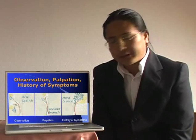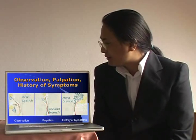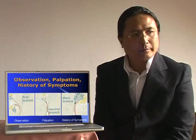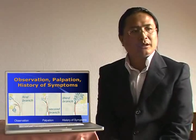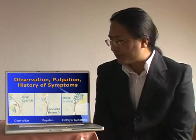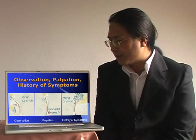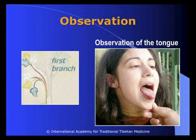Now we see the methods of diagnosis according to traditional Tibetan medicine. There are three important methods: observation, palpation, and the history of symptoms. In the observation, we observe the tongue, sense organs, eyes, ears, and so on.